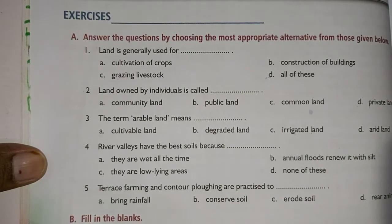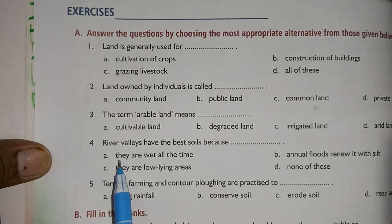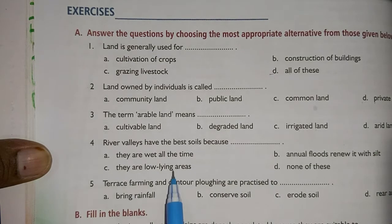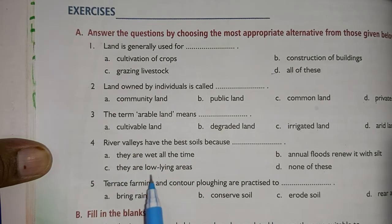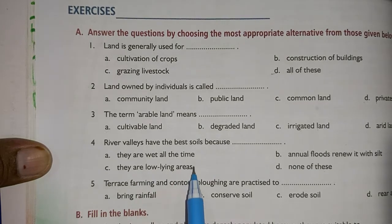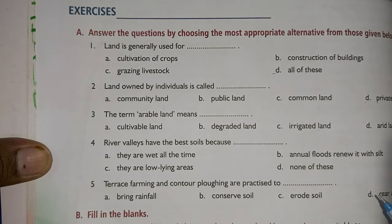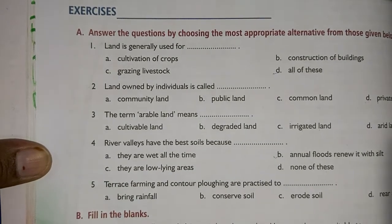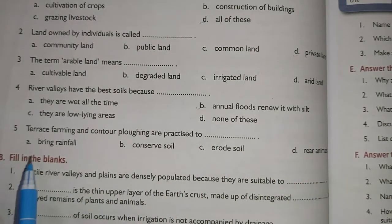The fourth question: river valleys have the best soils because — they are wet all the time, annual floods renew it with silt, they are low-lying areas, or none of these. They are not wet all the time — that is wrong. River valleys have the best soils because annual floods renew them with silt, which is very fertile. The answer is option B.